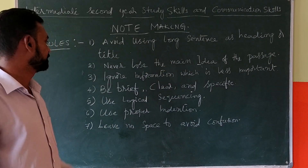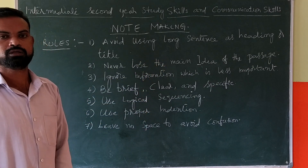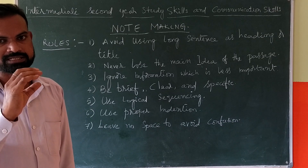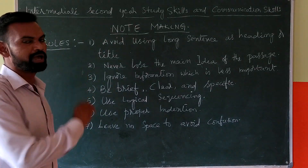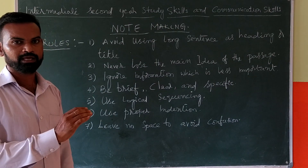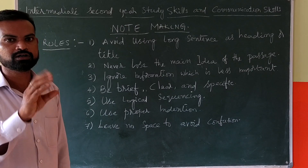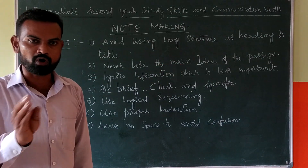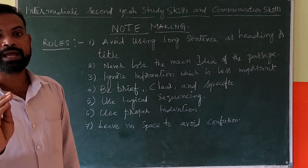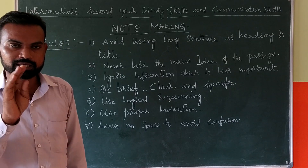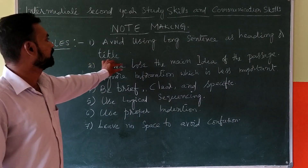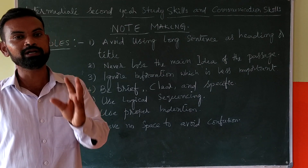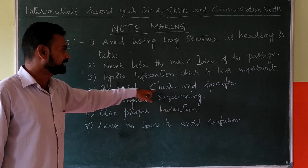Third rule: ignore information which is less important. You read a passage — say it has ten lines. You should make only five sentences. In those ten sentences, ignore the less important information. Keep only the important sentences and make it in three to five lines.